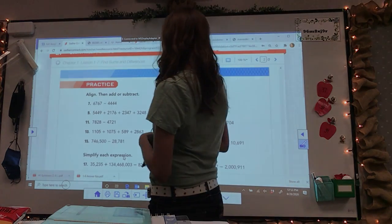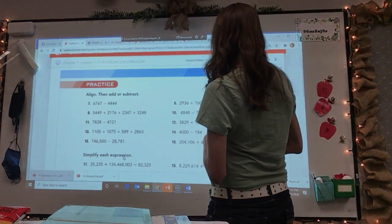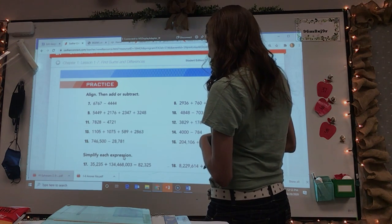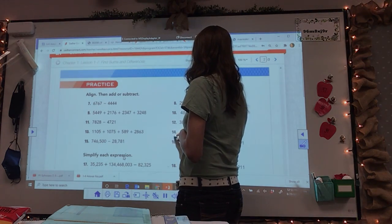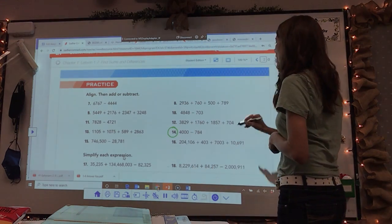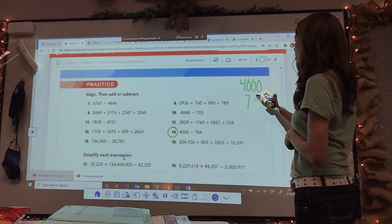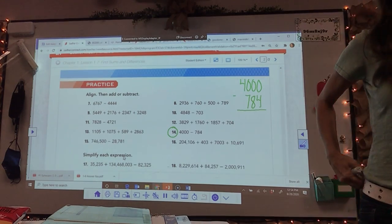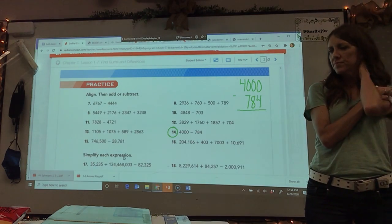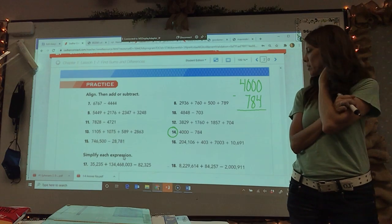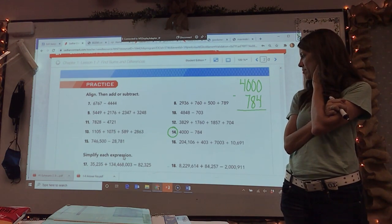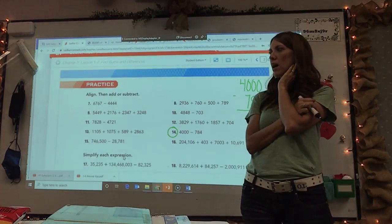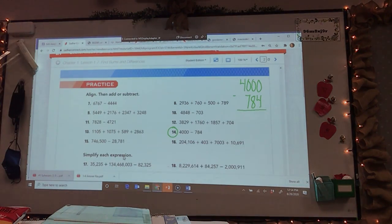Let's go over to a more difficult one. Let's take one where we need to do some borrowing. Wow, they kept these really simple for you. Let's go over to here. Let's do number, ooh, I'm going to give you a hard one. If you can do this one, you've got borrowing down. Let's take 4,000 minus 784.